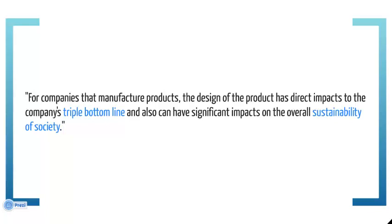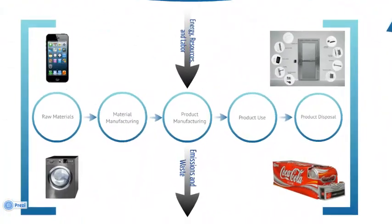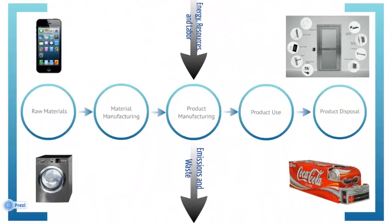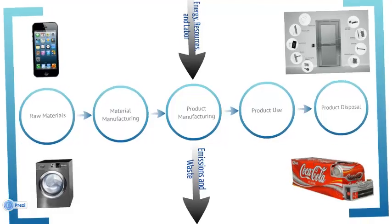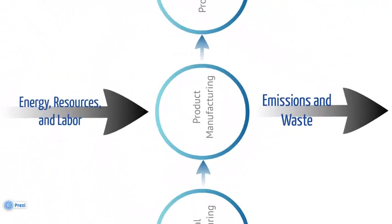The products that you design can impact the environment, people, and also have an effect on our economy. Our present system is a take-make-waste system, or cradle-to-grave. The typical life cycle process for making products is to take raw materials from the earth, manufacture the products, use the products, then dispose of them. This covers everything from packaging up through complex products like vehicles and electronics. We input energy resources and labor throughout the process. Emissions and waste come out of every step of the product life cycle.